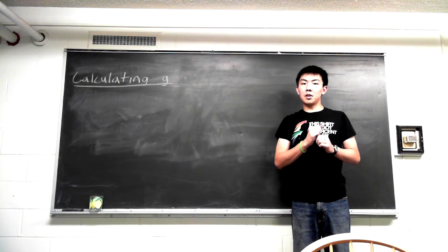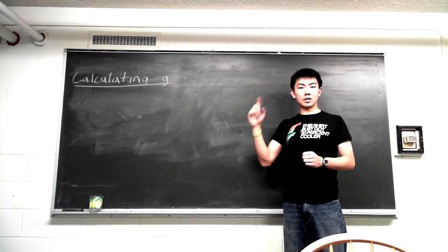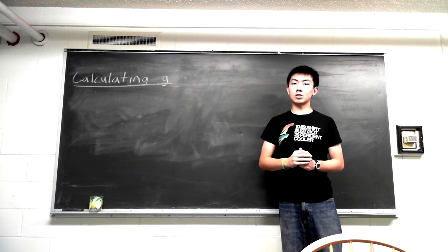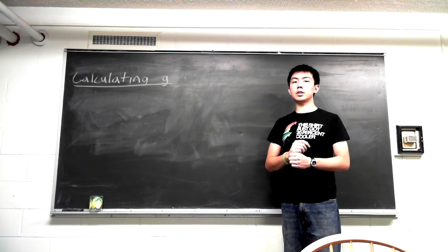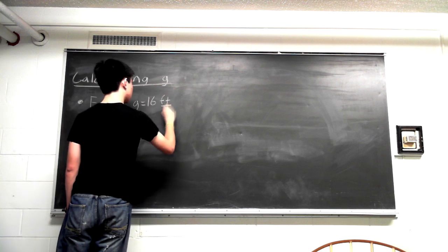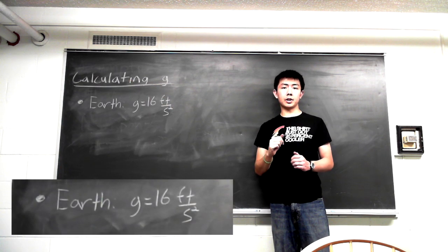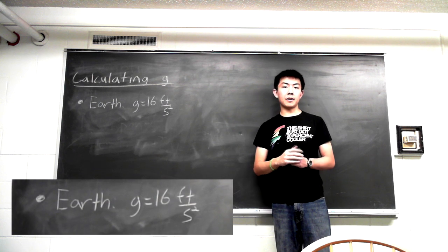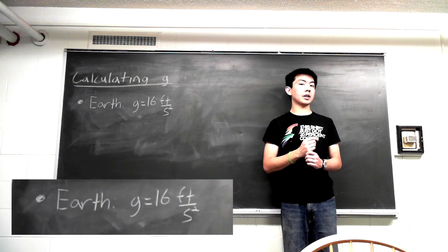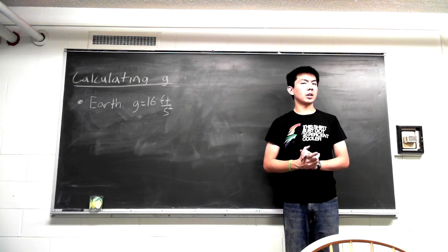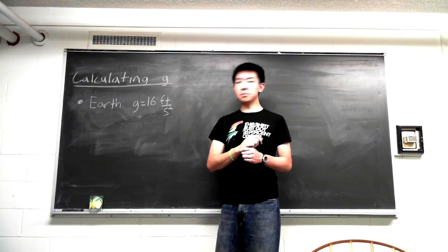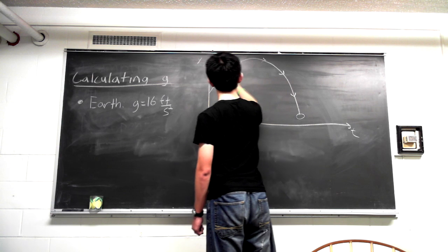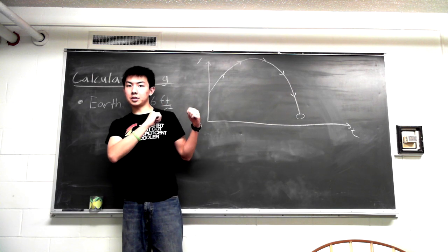All righty, let's get started. The first thing we're going to do is calculate G, the acceleration due to gravity, on the surface of the equestrian planet. On Earth, G is about 16 feet per second squared. Now this number shows up in Newton's equations of kinematics governing motion. In particular, G is very useful in calculating projectile motion.